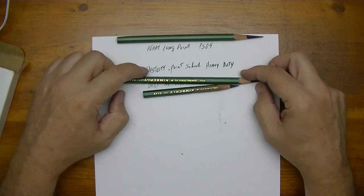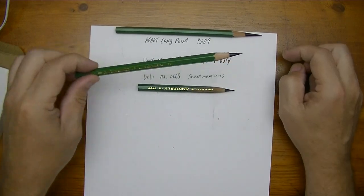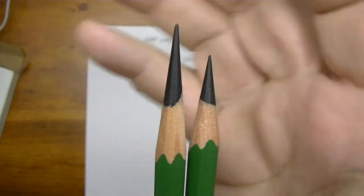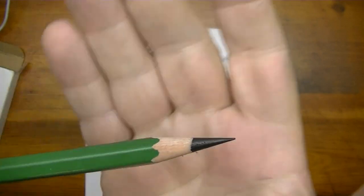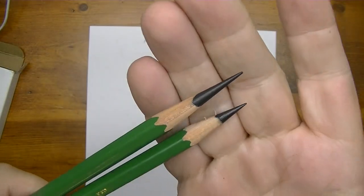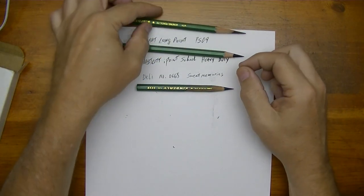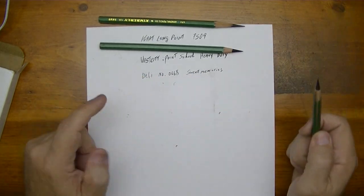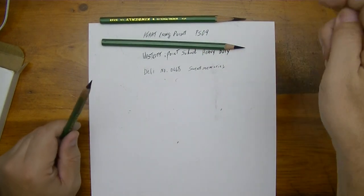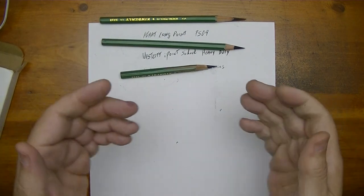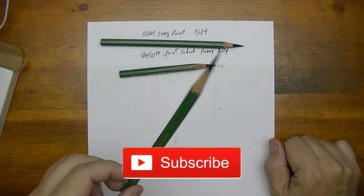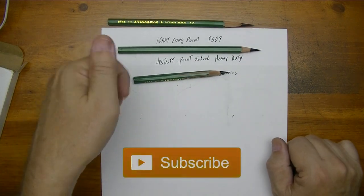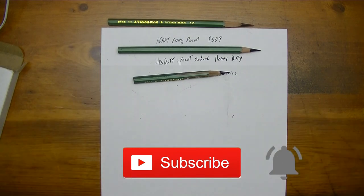And on top of that we have the Westcott iPoint school heavy duty which gives I think the second best long point. There's your two long points, obviously one is pretty nasty, the other one is just a pretty decent long point. Will do the job, but there you go, there are your choices that I can offer you. And of course if you want a hand cranker, well then there's that Deli, the Sweet Memory 0668. So I'll have the link to that video as well. So all three videos, the links will be down in the description below. Well I hope that answers any of your questions about sharpening the 9xxB with a really long point. I hope you like the video, if so please give me a thumbs up, subscribe if you haven't done so already, click the notification bell and I'll see you in the next video. Thanks for watching.